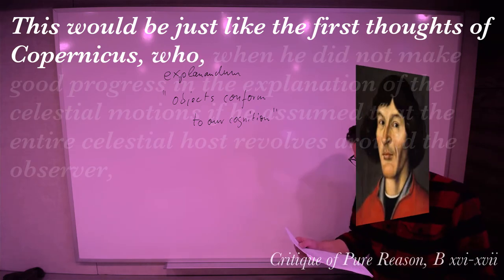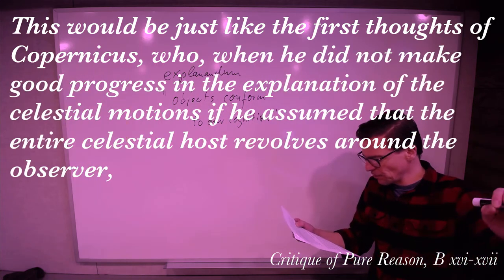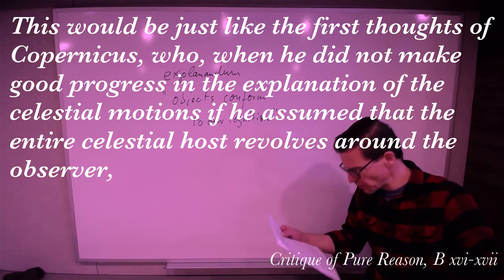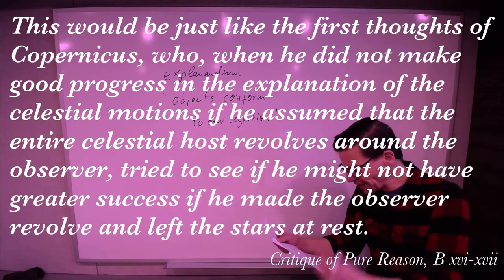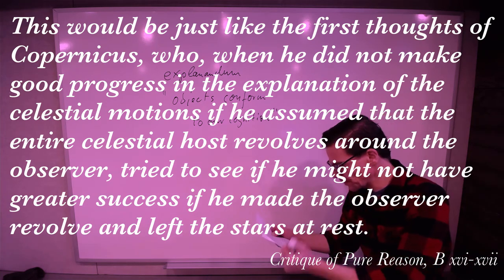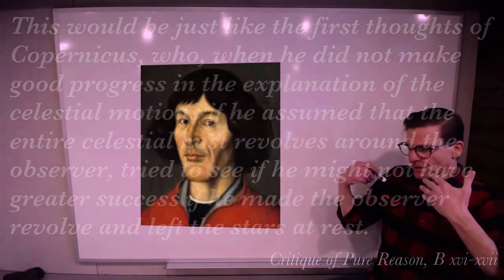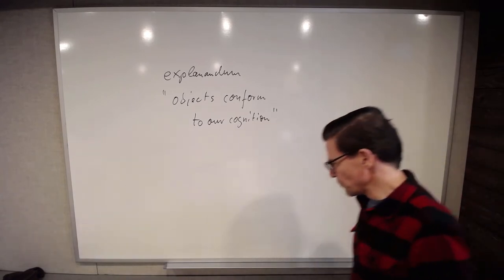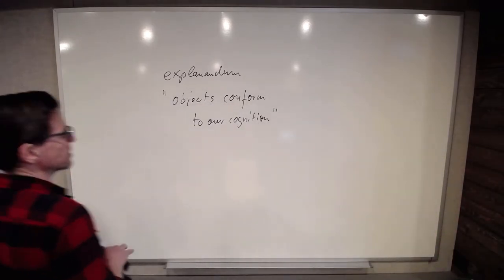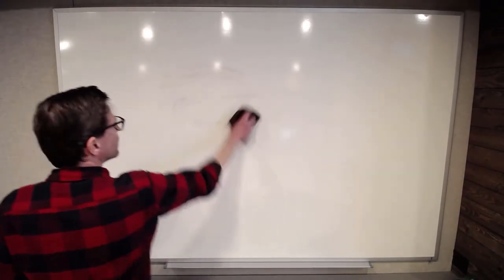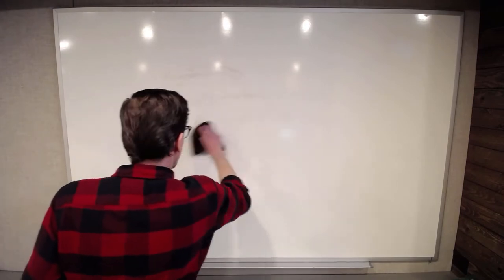Copernicus, when he did not make good progress in the explanation of the celestial motions, if he assumed that the entire celestial host revolves around the observer, tried to see if he might not have greater success if he made the observer revolve and let the stars at rest. So Copernicus did something similar. He got stuck just like philosophy and metaphysics got stuck in one place and he switched something around and in that way he got unstuck.